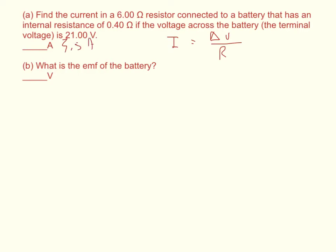And then what is the EMF of the battery? So you remember the EMF minus I times the internal resistance is equal to delta V. And so to find the EMF, we just do EMF is equal to delta V plus I times the internal resistance.